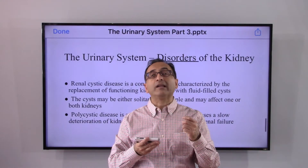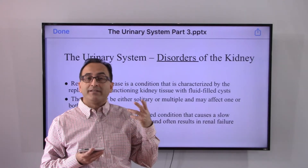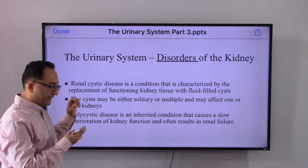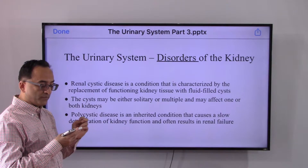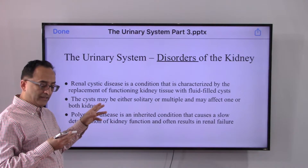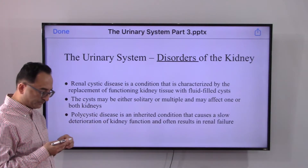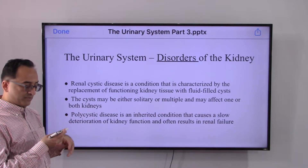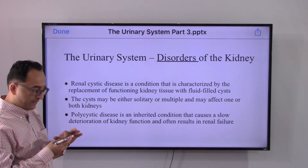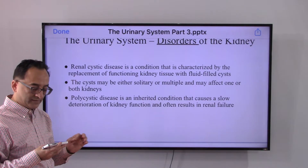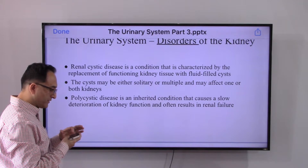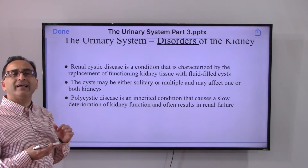Another frequently encountered kidney disease is cystic disease, or renal cystic disease. This condition is characterized by the replacement of functioning kidney tissue with fluid-filled cysts. You can have a normal kidney or a kidney with cysts on or within it. The cysts may be solitary or multiple, and may affect one or both kidneys. Polycystic kidney disease is an inherited condition that causes slow deterioration of kidney function and often results in renal failure.